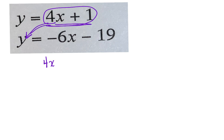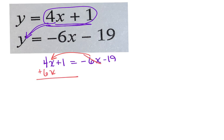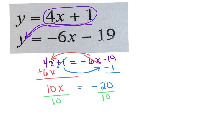When I have it like this, I can say the group 4x plus 1 equals the group negative 6x minus 19. Then I can just move my variables to one side. If I move my 6x over, remember it's a positive 6x to cancel it over here. That's going to give me a 10x. And if I move my 1 over, it's going to be a negative 1 because it was positive on this side — so we're going to cancel it there. That's going to equal negative 20, and then I just divide.